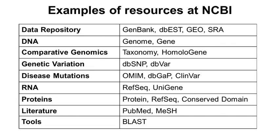This table lists examples of resources at NCBI. There are several large data repositories, including GenBank for nucleotide sequences, DBEST for expressed sequence tags which are no longer popular, GEO for gene expression data, and SRA for next-generation sequencing reads. For DNA, there are annotated databases: Genome and Gene. To assist research in comparative genomics, there are the Taxonomy resource and HomoloGene. Genetic variations and disease mutations can be found in dbSNP, dbVAR, OMIM, dbGAP, and ClinVAR. Annotated RNAs are available in RefSeq and UniGene.